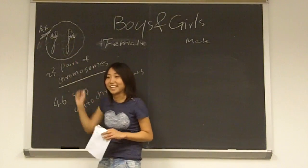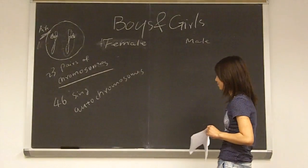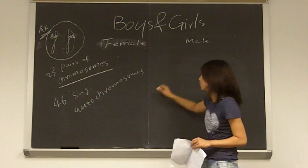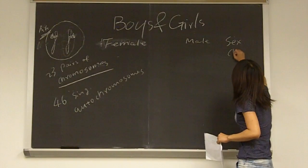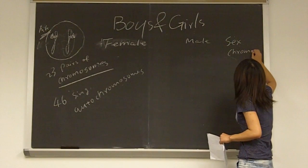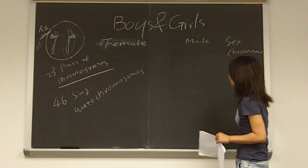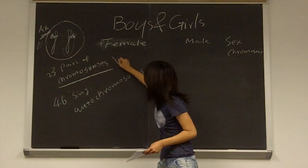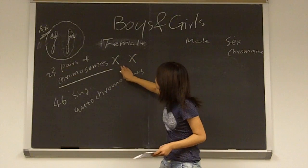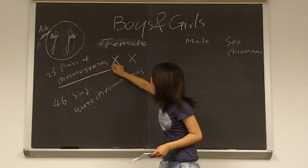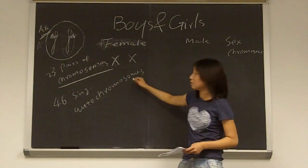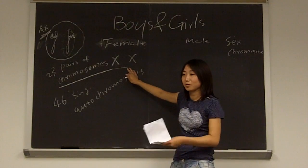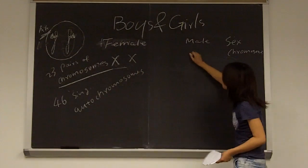Okay. And so the 23rd pair of chromosomes we call sex chromosomes. For females, we have XX, which means both chromosomes are X type. This is the name of the chromosome. For males, it's XY.